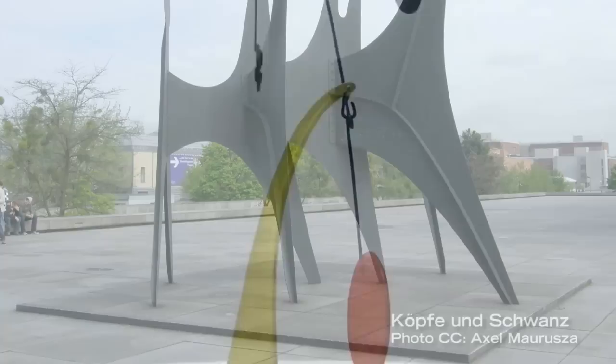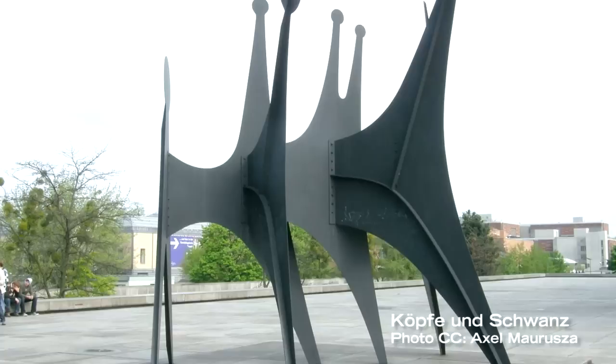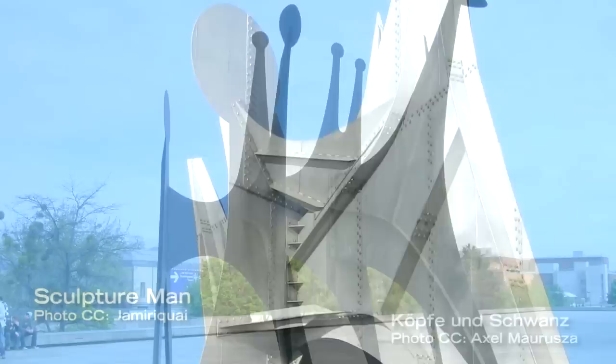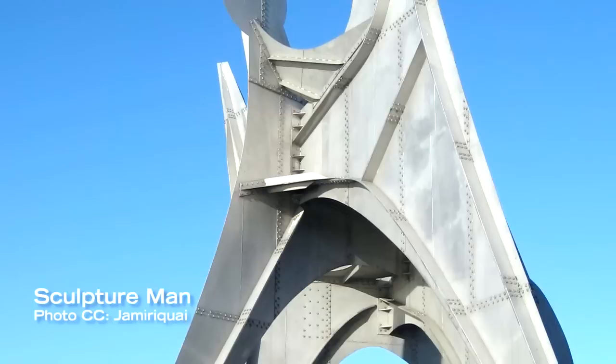In the 1960s and 70s, Calder became a household name as a result of monumental public installations. In these years, he was also given retrospective exhibitions at several museums, including the Guggenheim and the Whitney in New York and the National Museum of Modern Art in Paris.